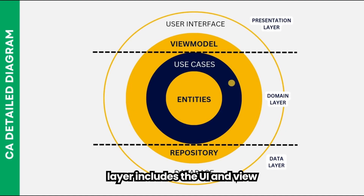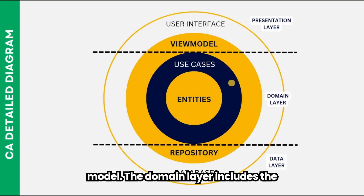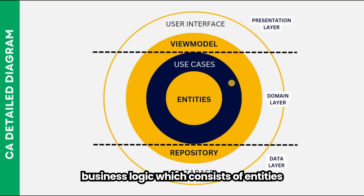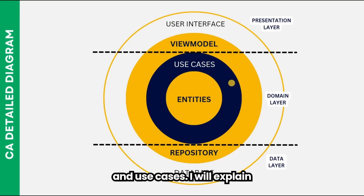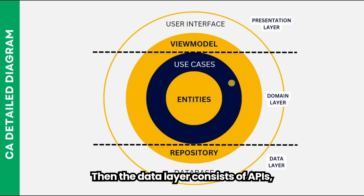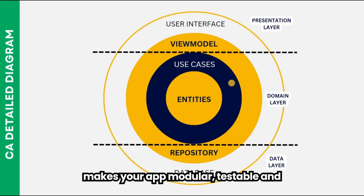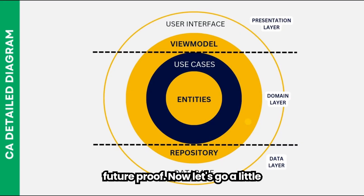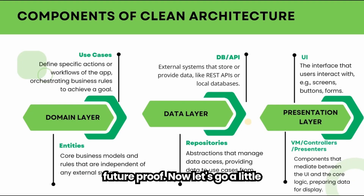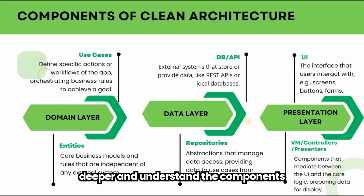To summarize the detailed structure: the presentation layer includes the UI and view model; the domain layer includes the business logic consisting of entities and use cases; and the data layer consists of APIs, databases, and repositories. This separation makes your app modular, testable, and future-proof.